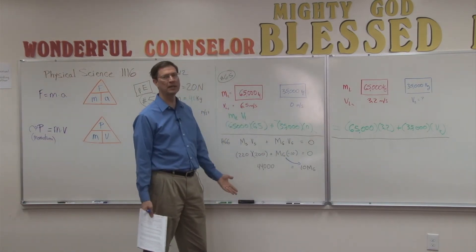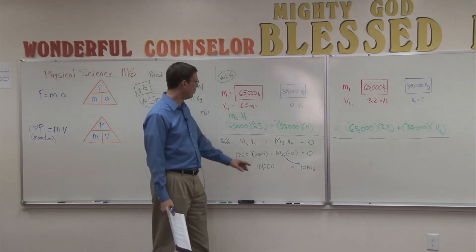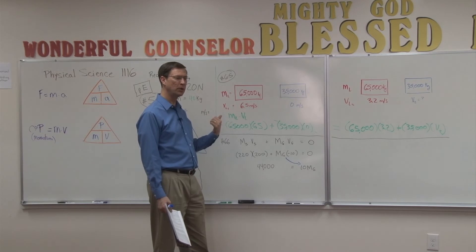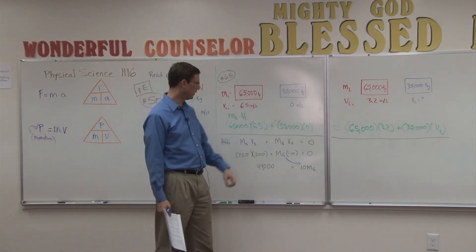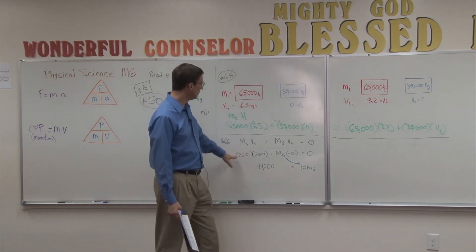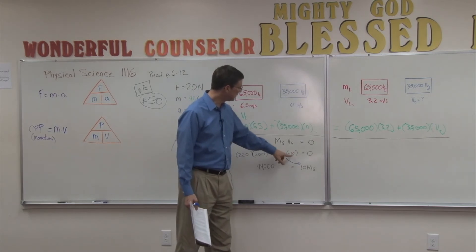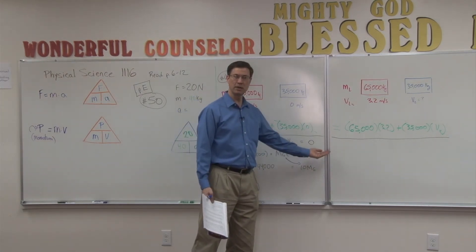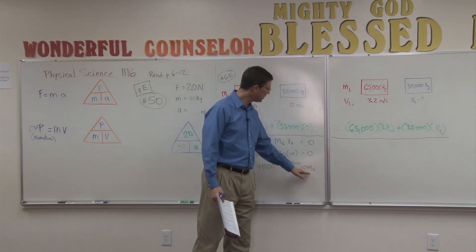Now, the reason I did this is because they stuck in a negative number for the velocity of the gun, and that just means it's moving in the opposite direction that the shell was moving. So the first thing I'm going to do, once I've plugged in the numbers, is I'm going to take this negative 10 mg, move it to the other side of the equation.